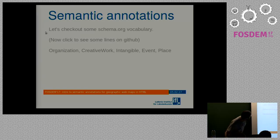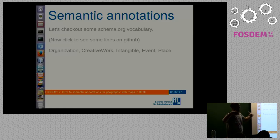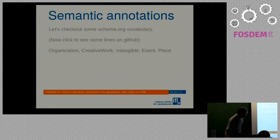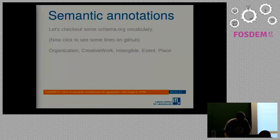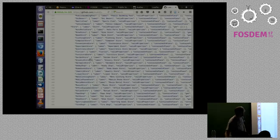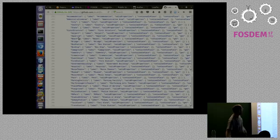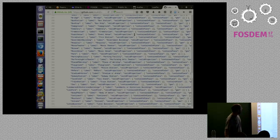If you've never seen schema.org, it's a public vocabulary developed by a consortium of major search engine developers, and the Google Knowledge Graph also understands this vocabulary. Here we can see the hierarchy — for example, of places: civic structure, maybe an airport, aquarium, beach, bus station, campground, cemetery, and so on.